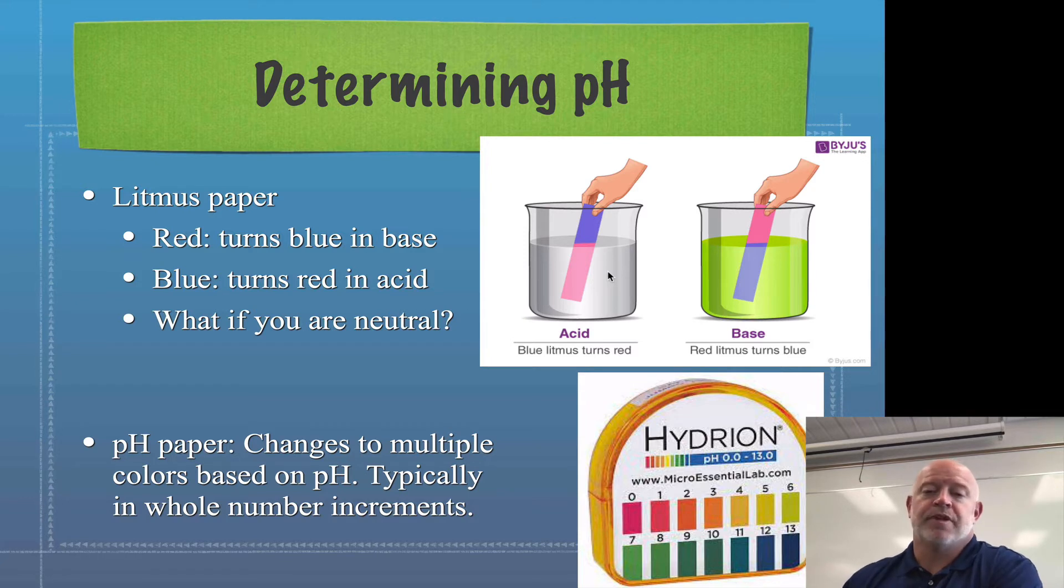So if you test something with litmus paper, let's say for example you have red litmus paper and it turns blue, you know you got a base. If you have red litmus paper and you dip it in your solution and you get no change, you still have one of two options. It could be neutral or it could be an acid. That's why you want to use both litmus papers in conjunction with each other.